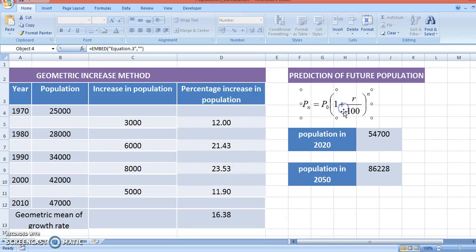With this equation, you can calculate population in the next decade, that is 2020. The first term is P0 times (1 + R/100), where R is growth rate, to the power 1. We are getting this result. If you want to calculate population for 2050, you take base 47,000 times (1 + 16.38/100) to the power 4, since 4 decades pass.